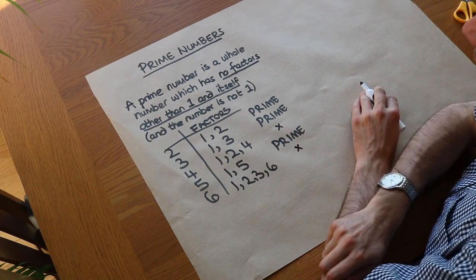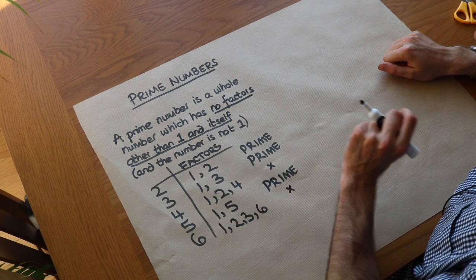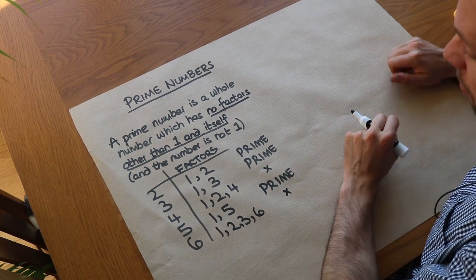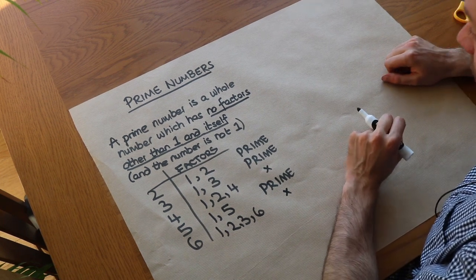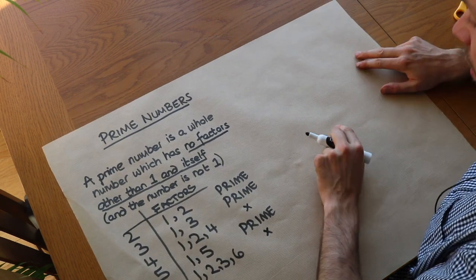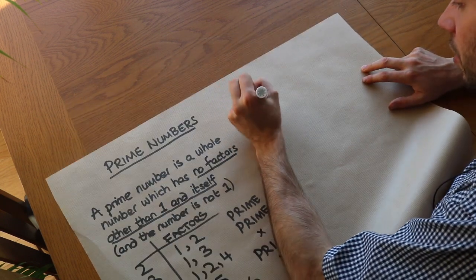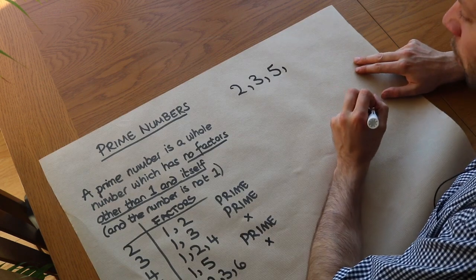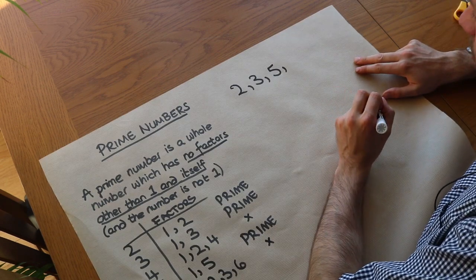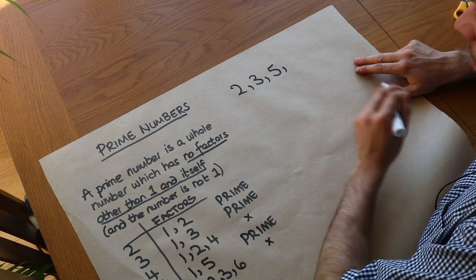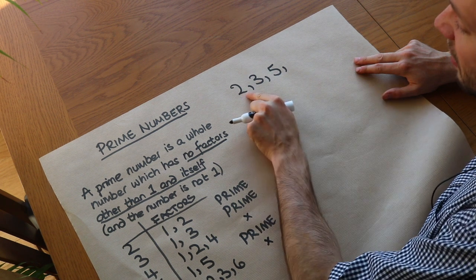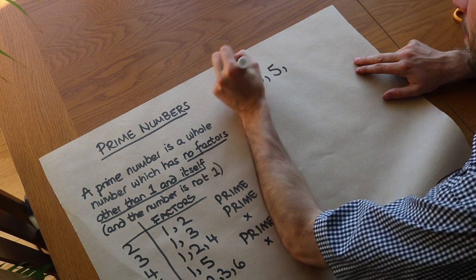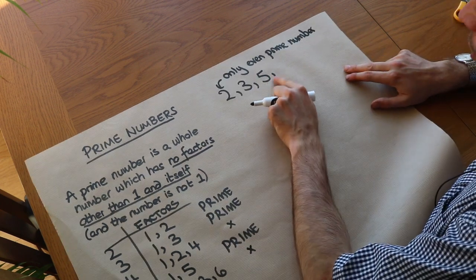For the remainder of this video, let's list the prime numbers up to 100. I highly encourage you to memorize the prime numbers up to 100 — it's very useful information. We know that two, three, and five are prime. No even numbers are going to be prime because they all divide by two. Two is the only even prime number.